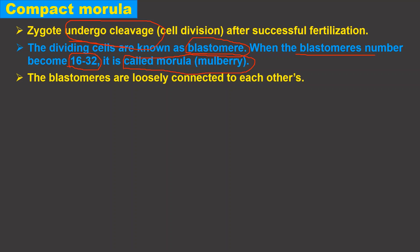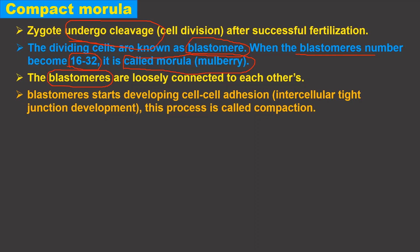Blastomeres, during that process, are loosely connected to each other. Compaction starts when the blastomeres develop cell-to-cell adhesion — that is, intercellular tight junctions. Between the cells, adhesion develops, and that process is called compaction.